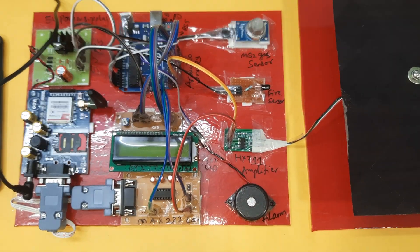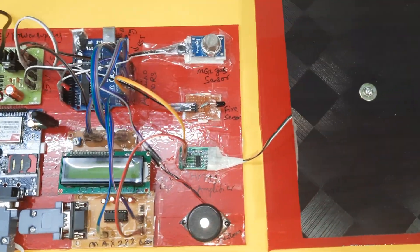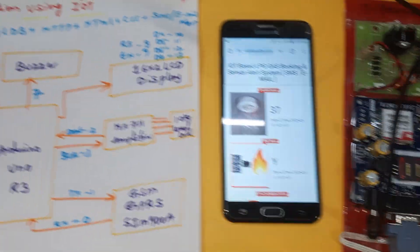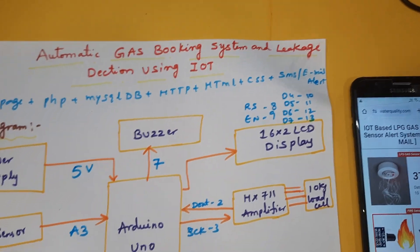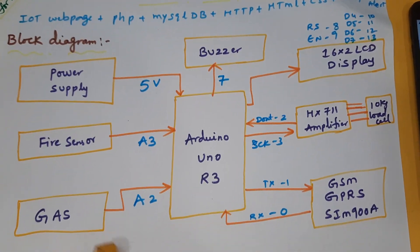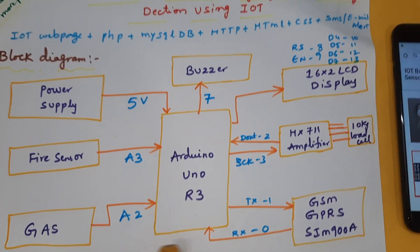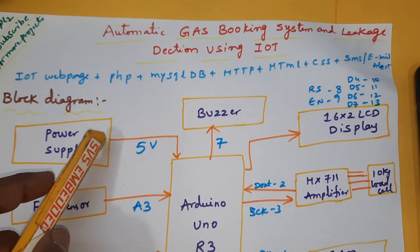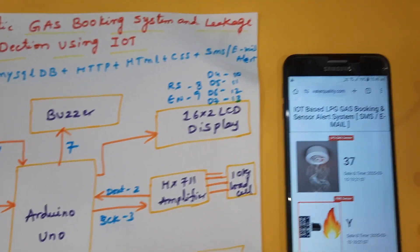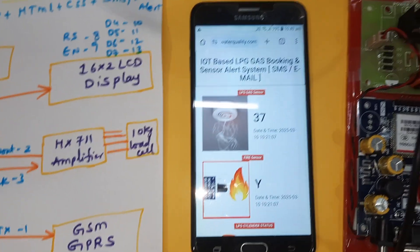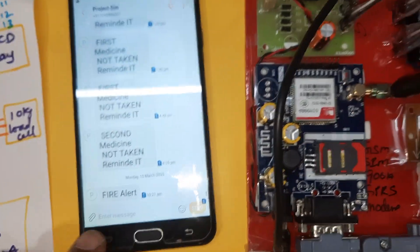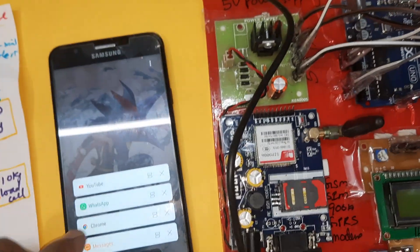Hi, we are from SVS Embedded. The project title is IoT-based LPG gas booking system, leakage detection, fire detection, and gas leakage detection. In this project we are using an IoT web page, PHP, MySQL, HTTP, HTML, and SMS alert and email alert — we are getting the SMS alert and fire alert.